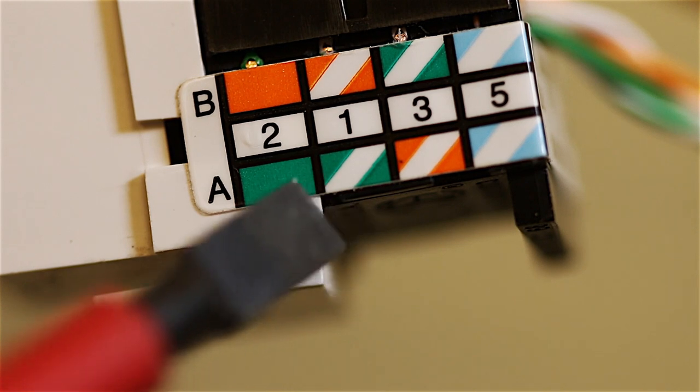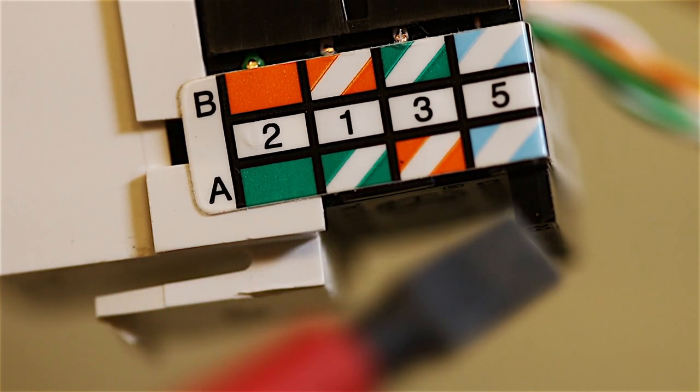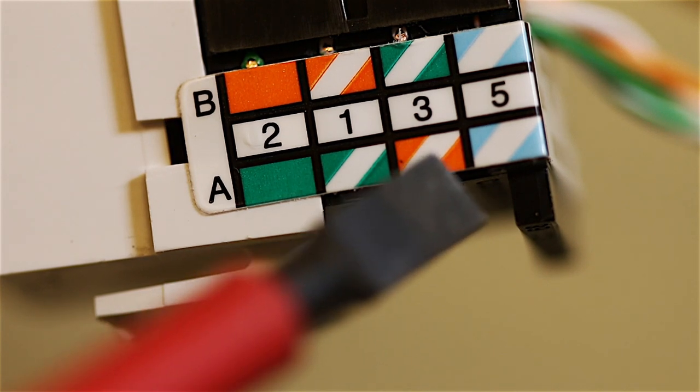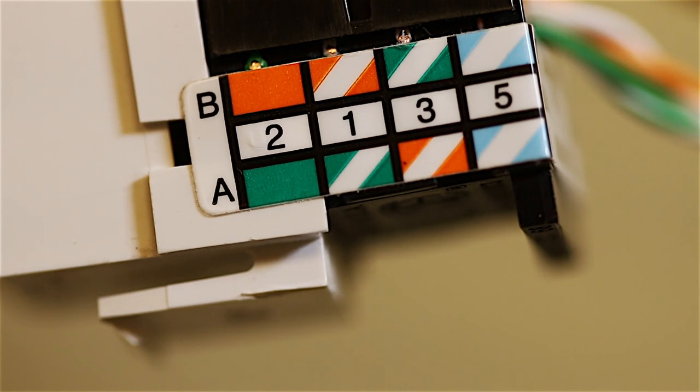If you look at the side of a category five jack, you'll notice that it has the two color codes. That's all dependent on the wiring standard. As long as you stay consistent, that's all that matters. You just don't want to mix a home or an office with the two different standards. You just want to stick to one.